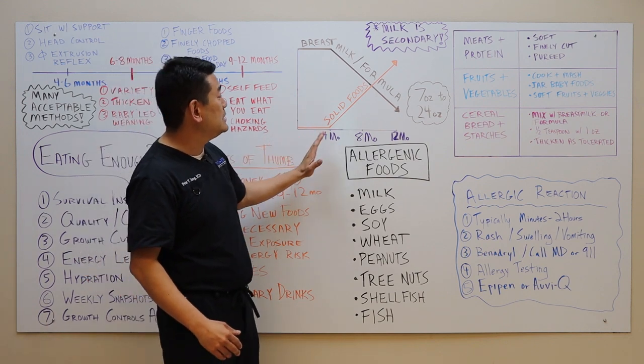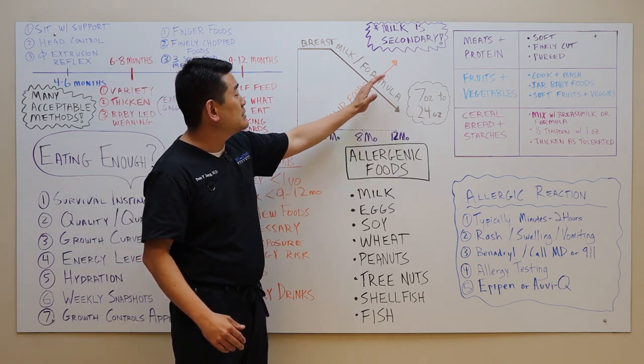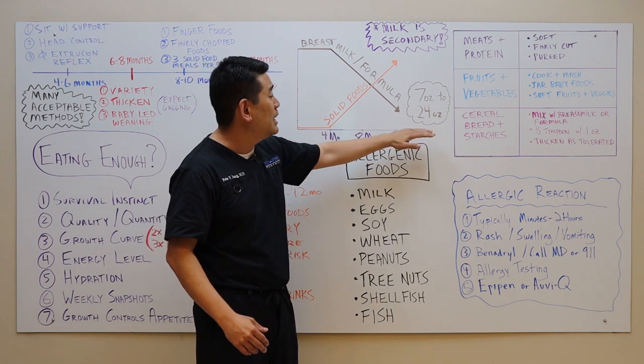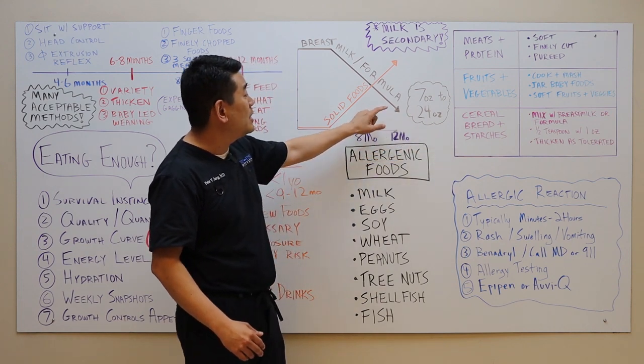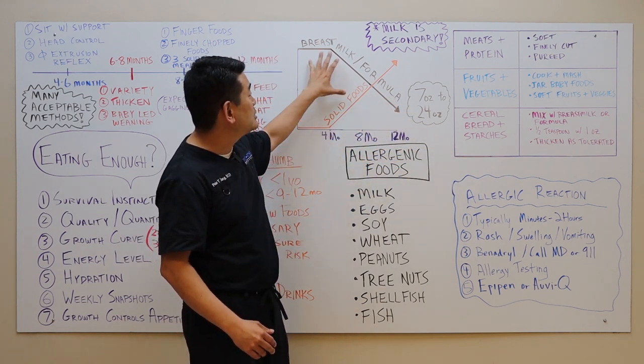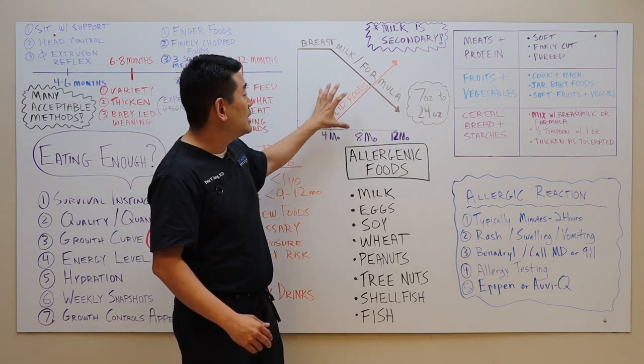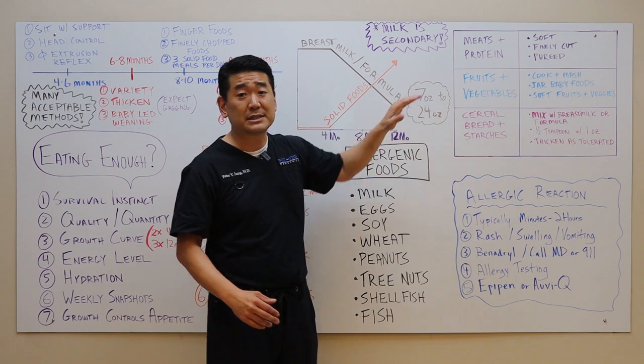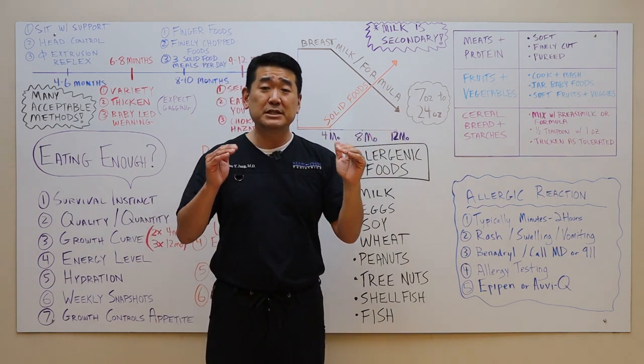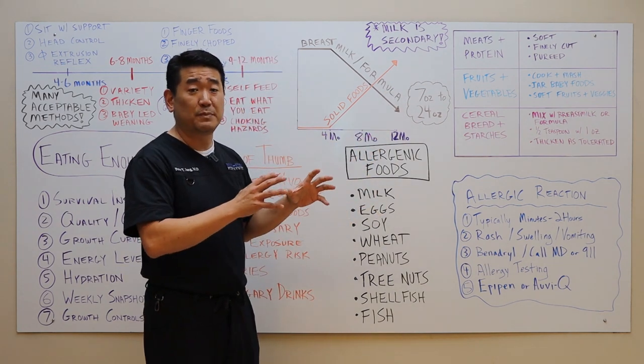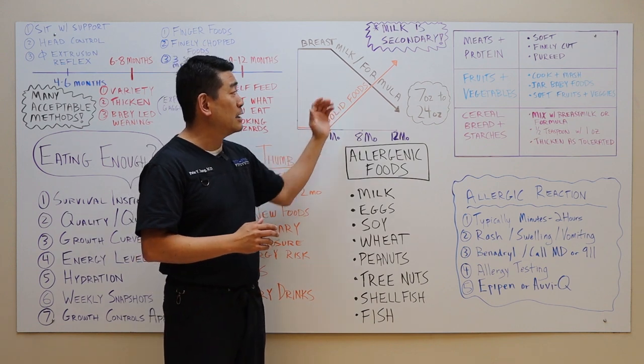That's why we want to move them towards the solid foods as soon as possible. As they get older, you want to see the amount of solid foods increasing over time. By the time they're a year old, they really should be taking no more than 7 to 24 ounces of breast milk or formula. The majority of their diet should be solid foods. I want to stress again that milk should be secondary and solid foods should be their primary source of nutrition as they get older.